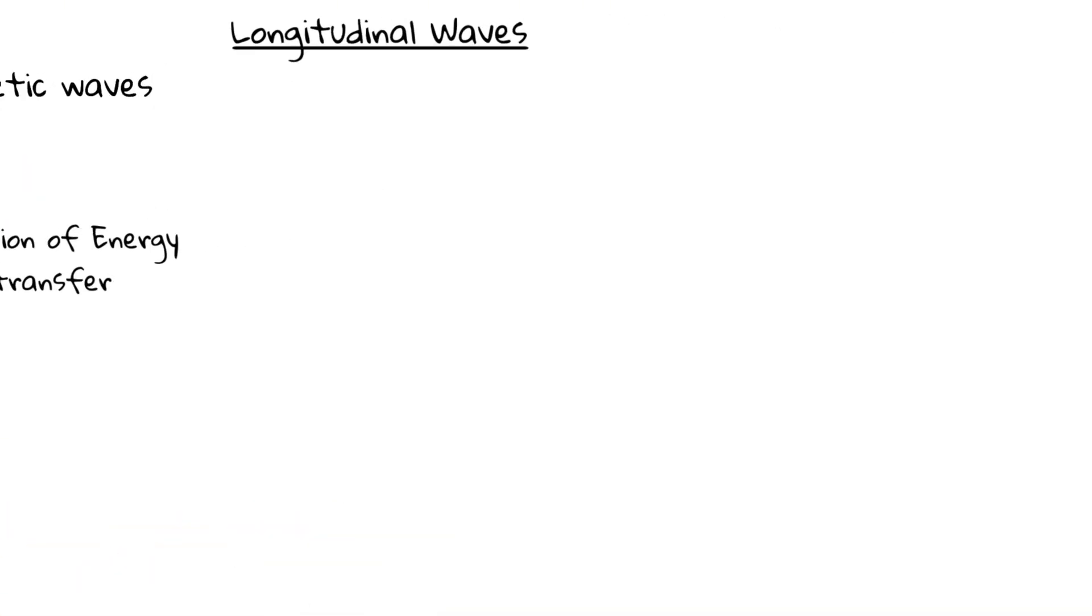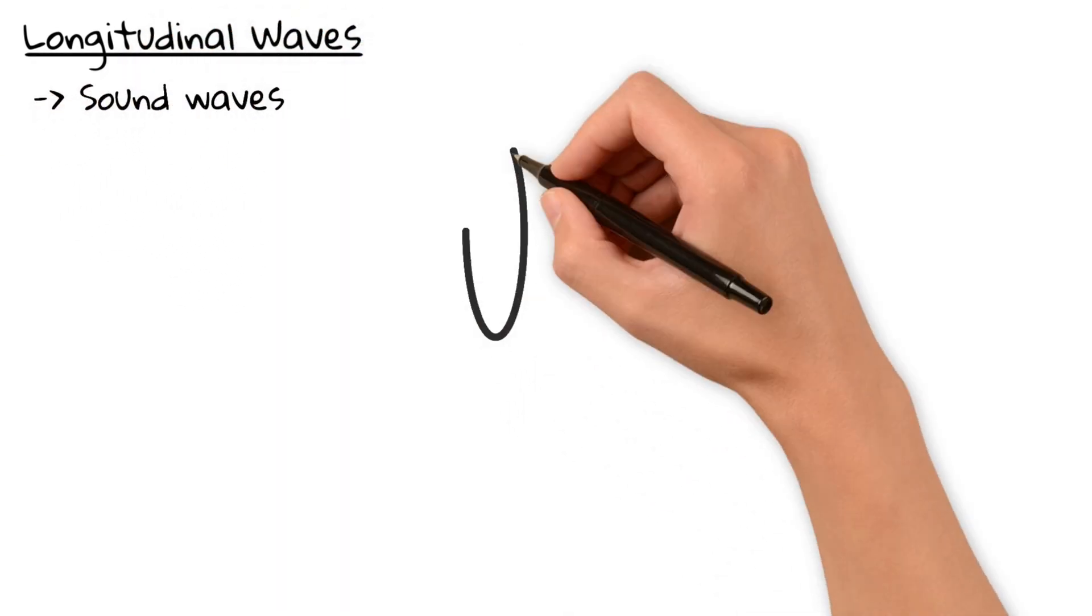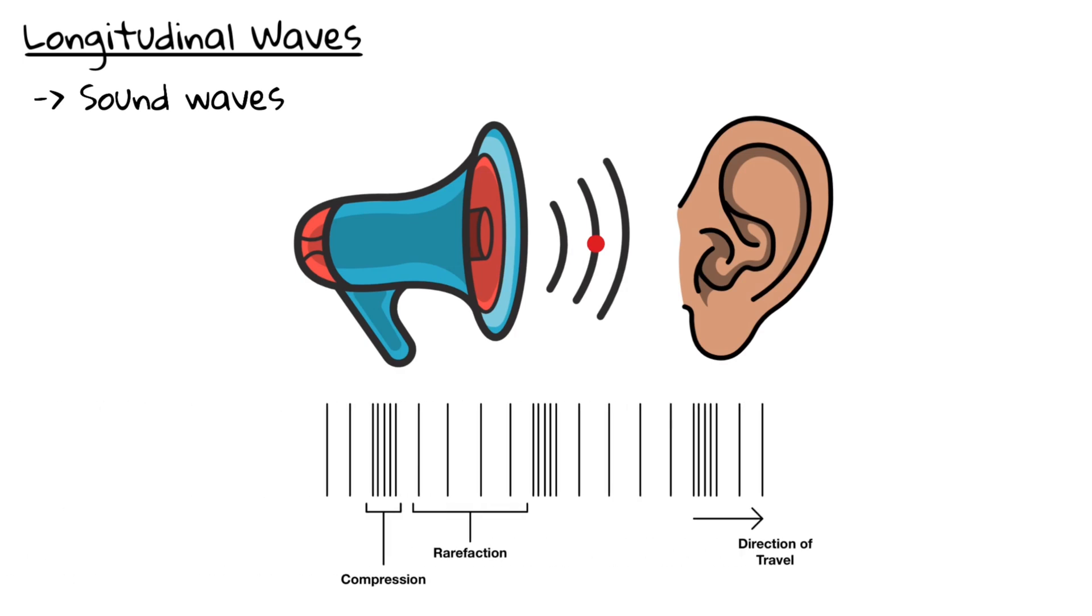But not all waves are transverse. Sound waves are longitudinal. This means the particles vibrate in the same direction as the wave is moving. We see areas of compression and areas of rarefaction. That's how sound travels through air.